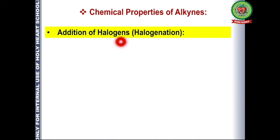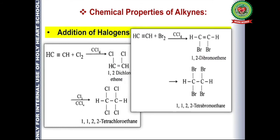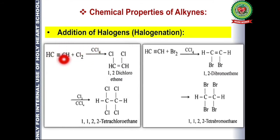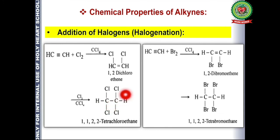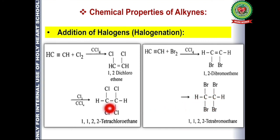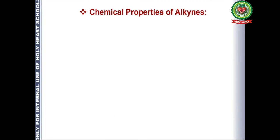The next reaction is halogenation — addition of halogens such as chlorine and bromine. When chlorine is added across the triple bond, it first converts the triple bond into a double bond, and then chlorine attacks the double bond again, converting it into a single bond. Since chlorine is added at four positions across two carbons, the product is 1,1,2,2-tetrachloroethane. Similarly, two molecules of bromine add across the triple bond and the product is 1,1,2,2-tetrabromoethane. Both reactions proceed using carbon tetrachloride as a non-polar solvent.